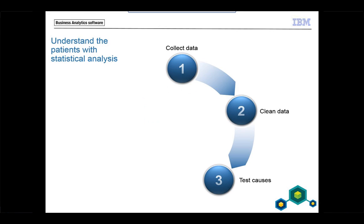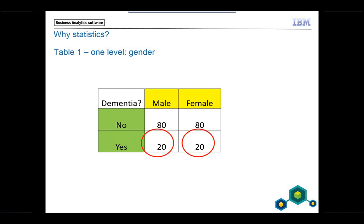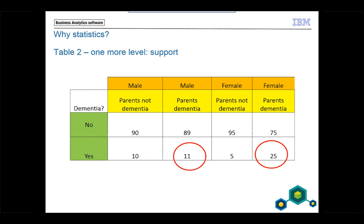I will explain why you need to go a little bit deeper into your data and not stay at just the first level. In this example, at one level — gender — there seems to be no difference between male and female: 20% are demented among males and 20% among females. But if we add another level, family history, it changes: if a close family member like a parent has had dementia, then females show 25% dementia versus only 11% among males. This difference couldn't be seen at just one level.